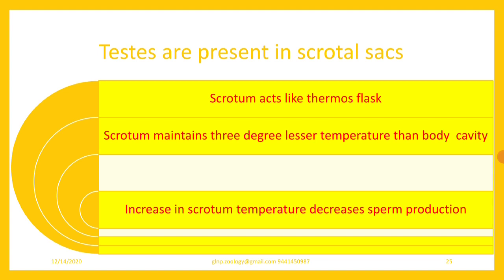Testes are present in scrotal sacs, and the scrotum acts like a thermos flask because spermatogenesis requires a temperature three degrees Celsius less than body temperature. As a result, the scrotal sacs encourage the process of spermatogenesis. Scrotum maintains three degrees lesser temperature than the body cavity, and an increase in scrotum temperature decreases sperm production.